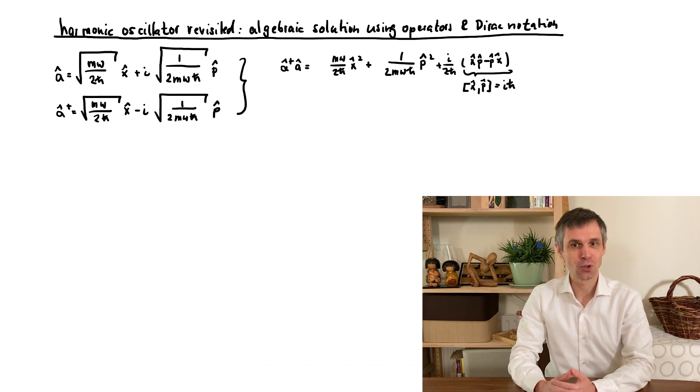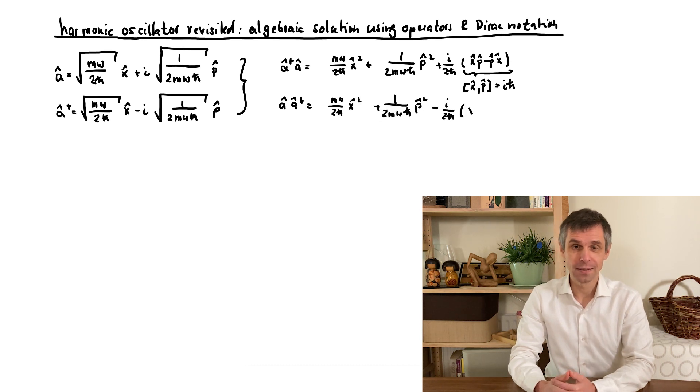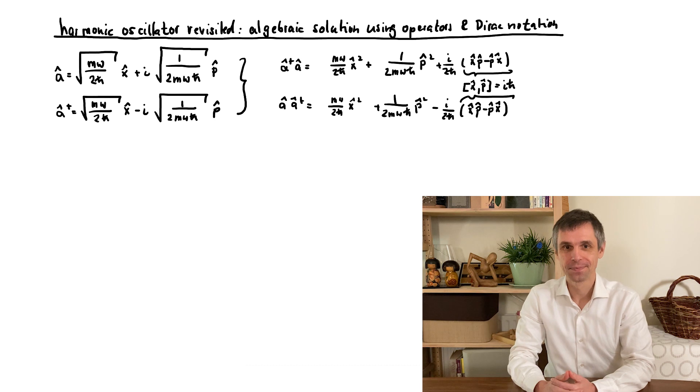The first two terms just look like the Hamiltonian of the harmonic oscillator. There is still a difference, but this difference actually looks somewhat familiar. It indeed involves the commutator of position and momentum, which we just showed equals ih bar.